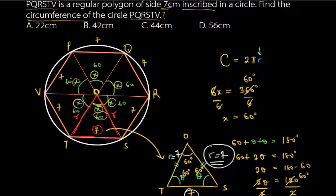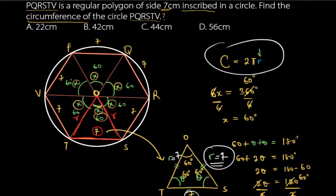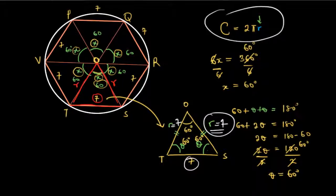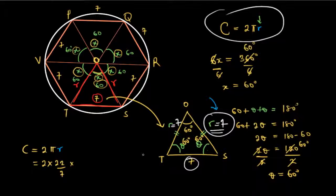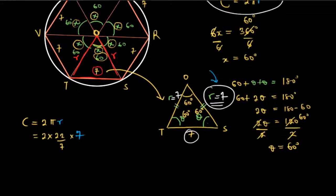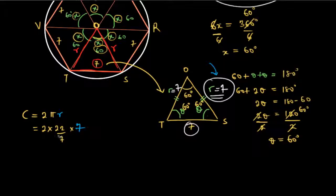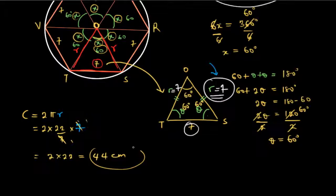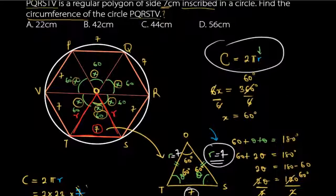Now we can find the circumference using C = 2πR. Substituting π = 22/7 and R = 7: C = 2 × (22/7) × 7. The 7 in the denominator cancels with the radius 7, leaving 2 × 22 = 44 cm. So the circumference of the circle is 44 cm.